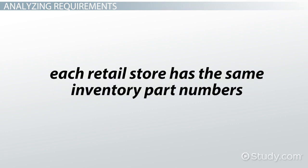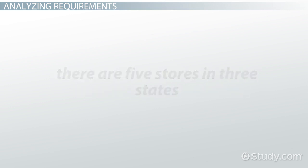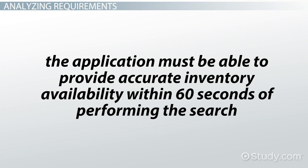Next, each retail store has the same inventory part numbers. Next, there are five stores in three states. Lastly, the application must be able to provide accurate inventory availability within 60 seconds of performing the search.